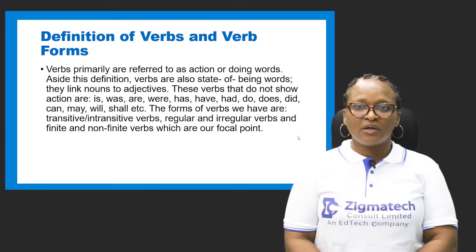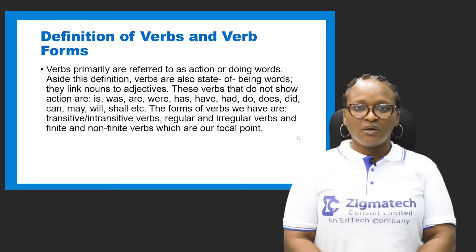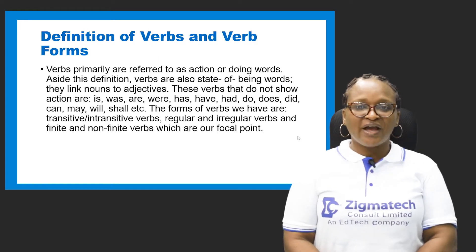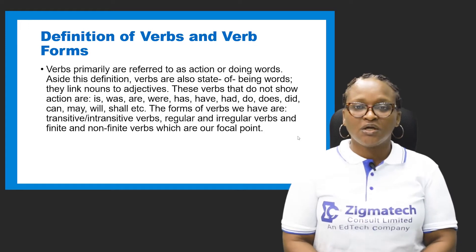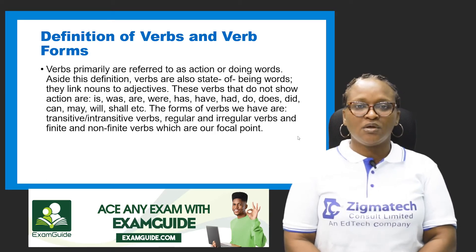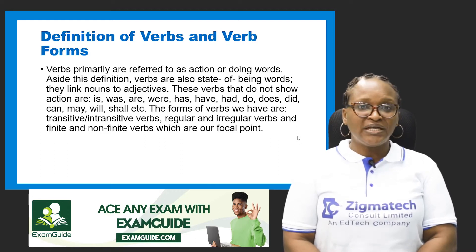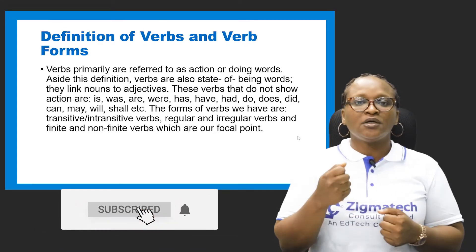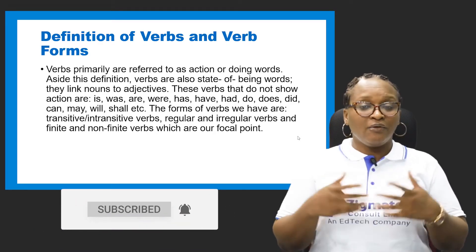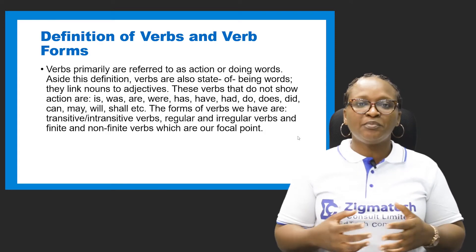What is a verb? A verb is an action or a doing word. But if we define a verb only as an action or doing word, the definition would be incomplete. We would restrict ourselves to knowing that verbs are just things we do, like to jump, to run — words that show action: running, jumping, skip, dance.